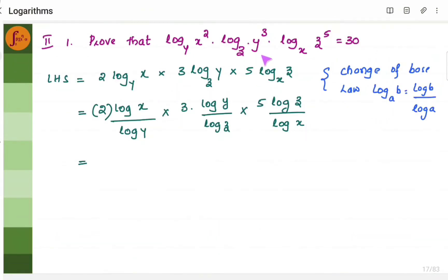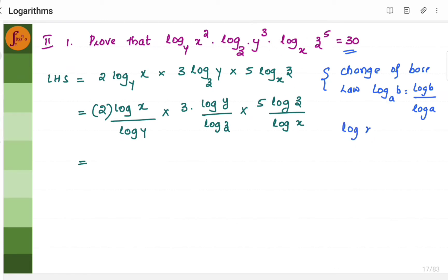Let us take the first example. We will have to prove that this entire expression is equal to 30. We will first expand this. Log x squared is nothing but 2 log x; y cubed gives 3 log y; z to the power 5 gives 5 log z — using the log property that log m to the power n is equal to n log m.